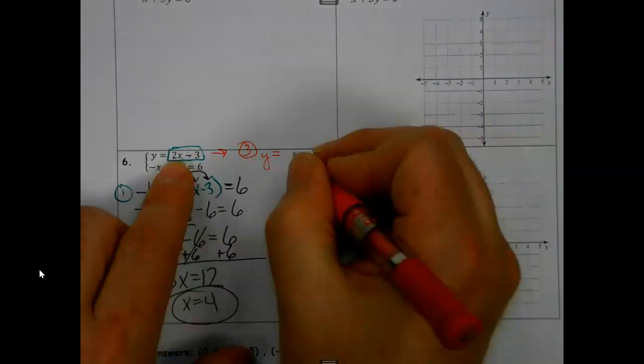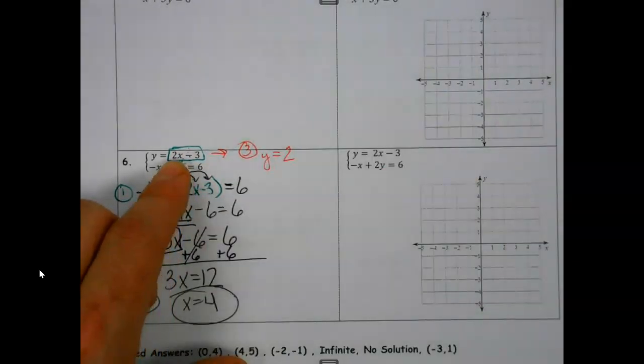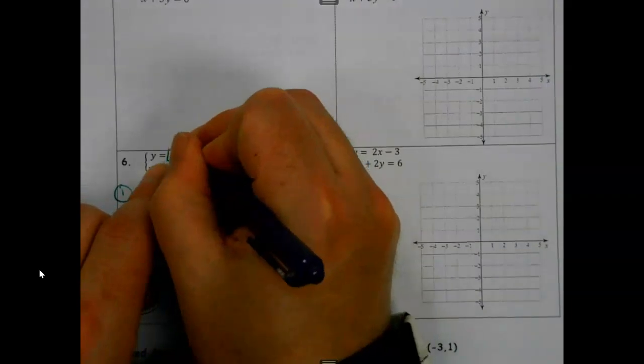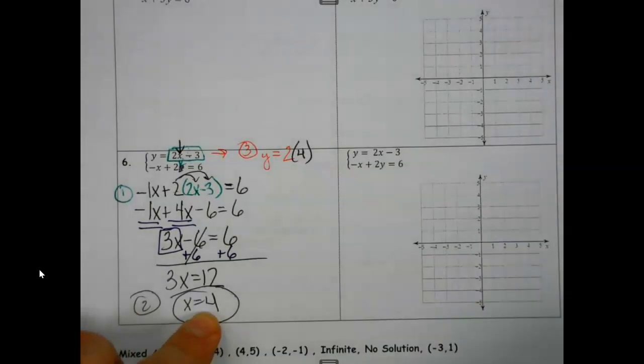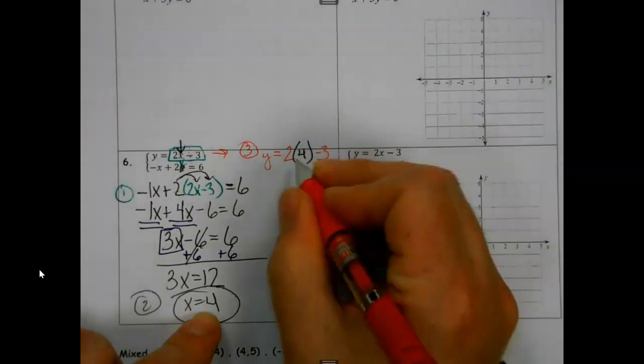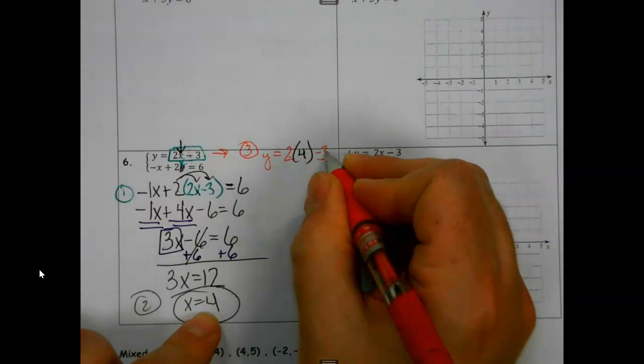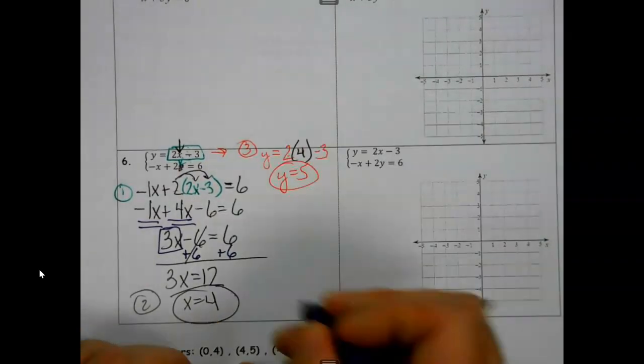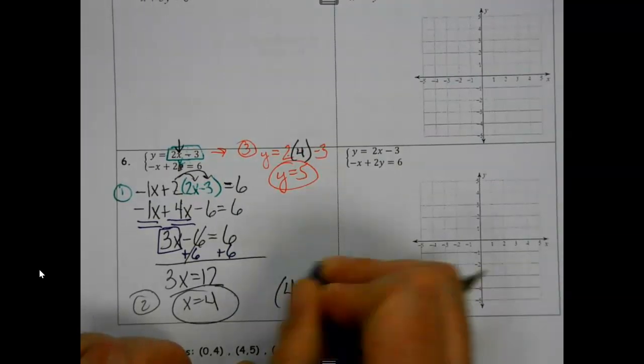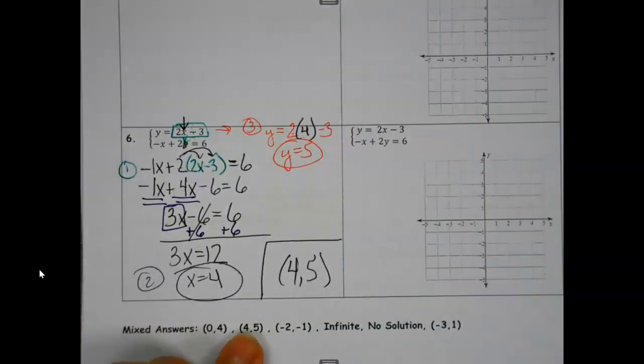Step three. We're going to start writing this, but when we get to x, we know what x is now. It's not a mystery anymore. Times four is eight, minus three is five. I've got my point. I can check my answer down here in the bottom. I'm good to go.